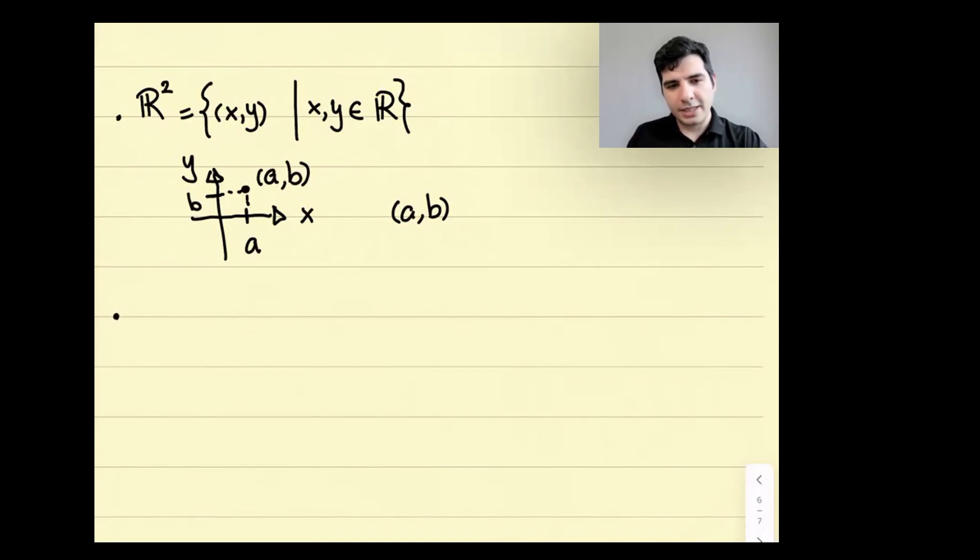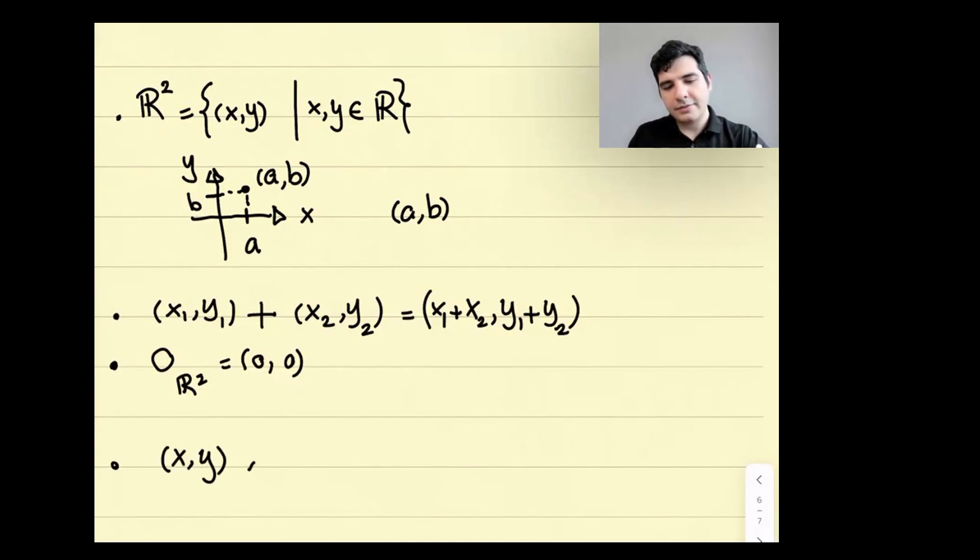So R² is a set, it also is a group. If I pick two elements in R², let's say one is (x₁, y₁), the other is (x₂, y₂), there is an addition, and it's component-wise. We define the sum of these to be (x₁ plus x₂, y₁ plus y₂). It is a group. You can see it's associative. The zero of R² is the pair (0, 0), where both x component and y component are 0. And there is an inverse: if you have (x, y), the additive inverse is (-x, -y).